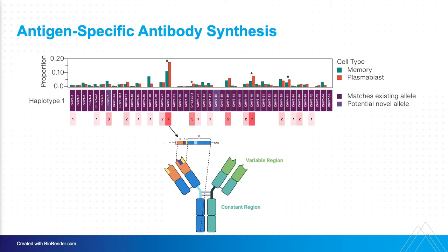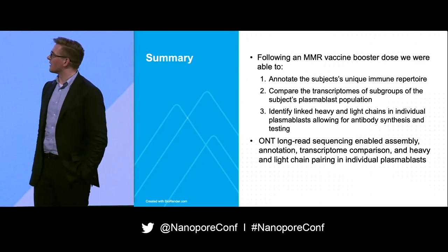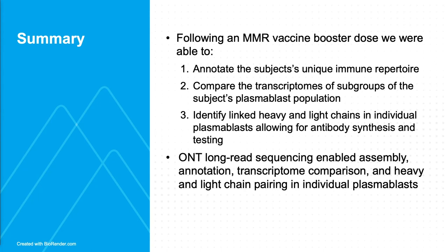The VGN allele is part of the variable region and helps dictate what you're capable of binding to. With these paired heavy and light chains we're successfully getting the VDJ region and the exact isotype being utilized, which has a big effect on what that antibody is capable of doing. In summary, we were able to annotate the subject's unique immune repertoire, compare transcriptomes of plasmablast subgroups, and identify linked heavy and light chains — all with ONT. The annotation step happened on a MinION and the single-cell step on a PromethION.